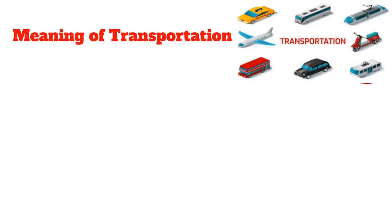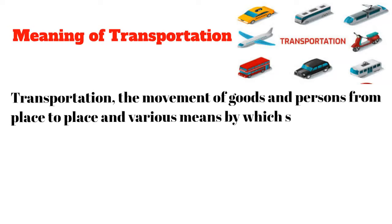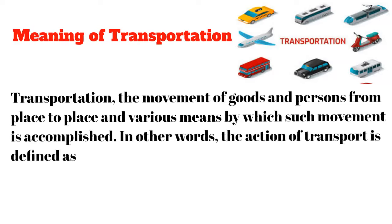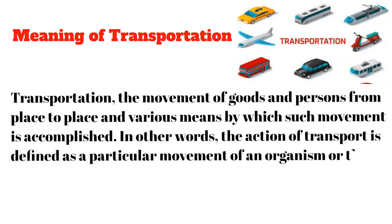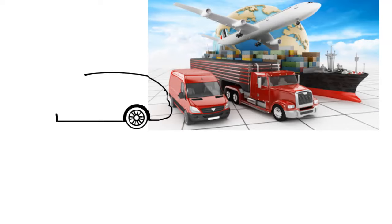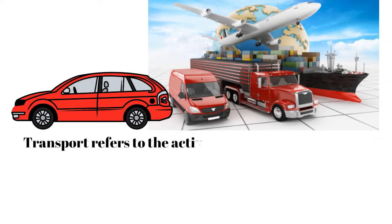Meaning of transportation: Transportation is the movement of goods and persons from place to place, and the various means by which such movement is accomplished. In other words, transport is defined as the particular movement of an organism or things from one point to another. Transport refers to the activities that facilitate physical movement of goods as well as individuals from one place to another.